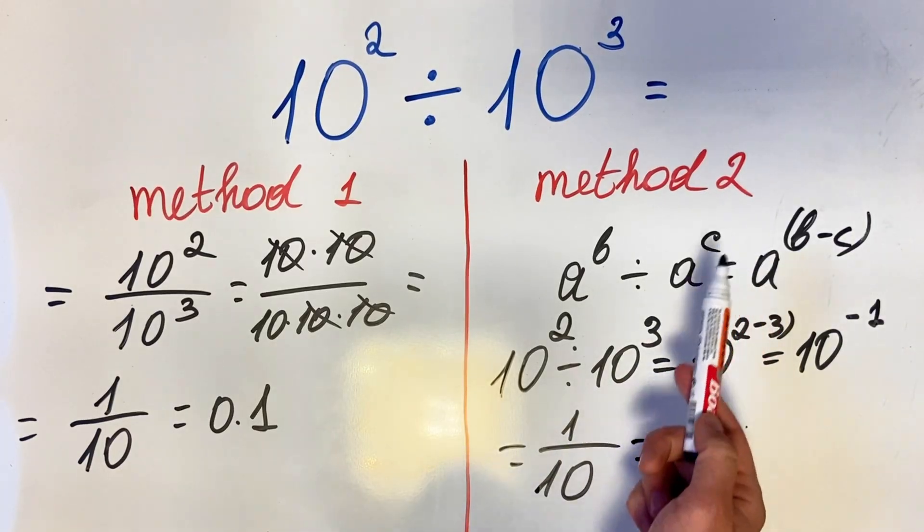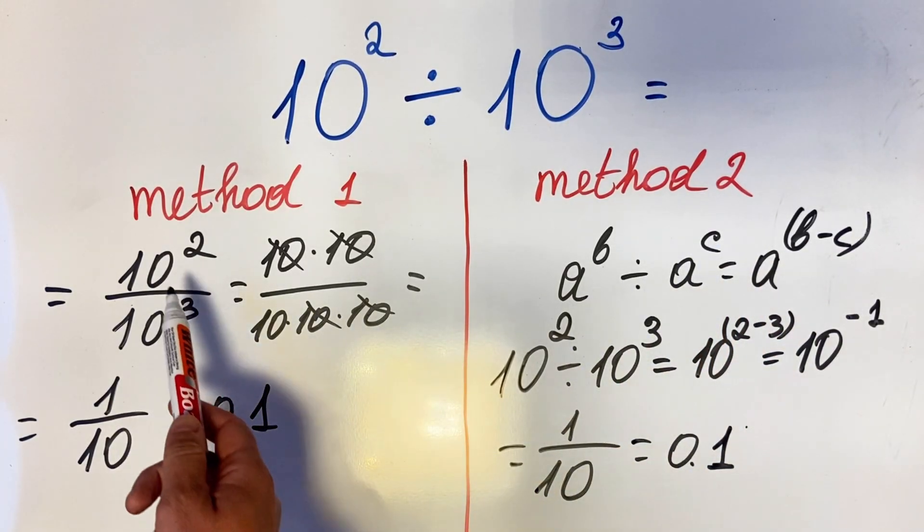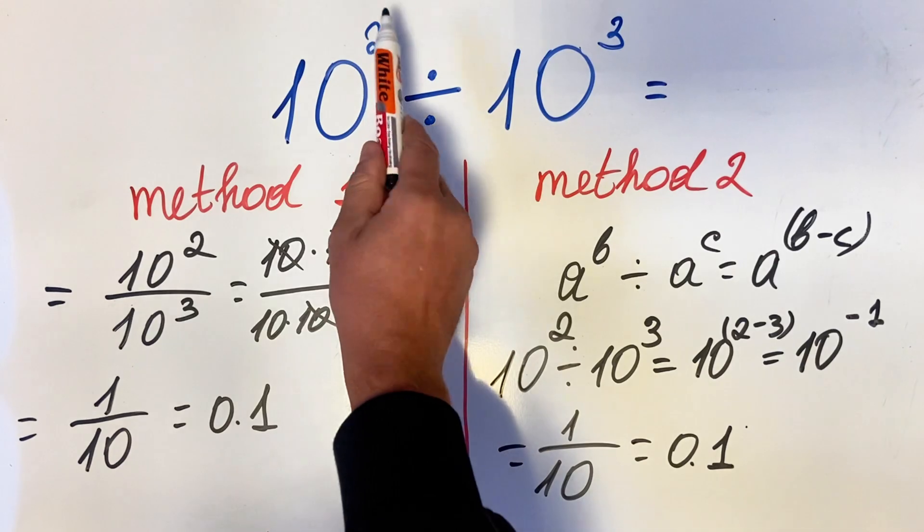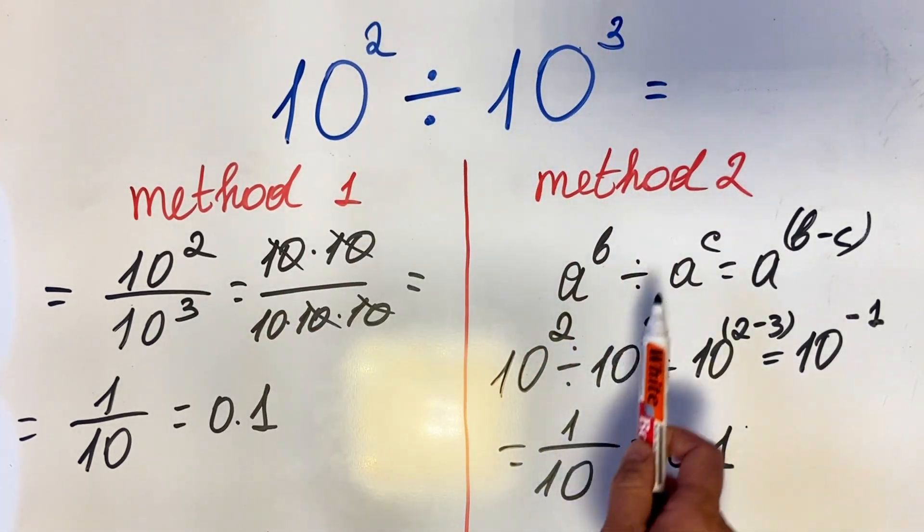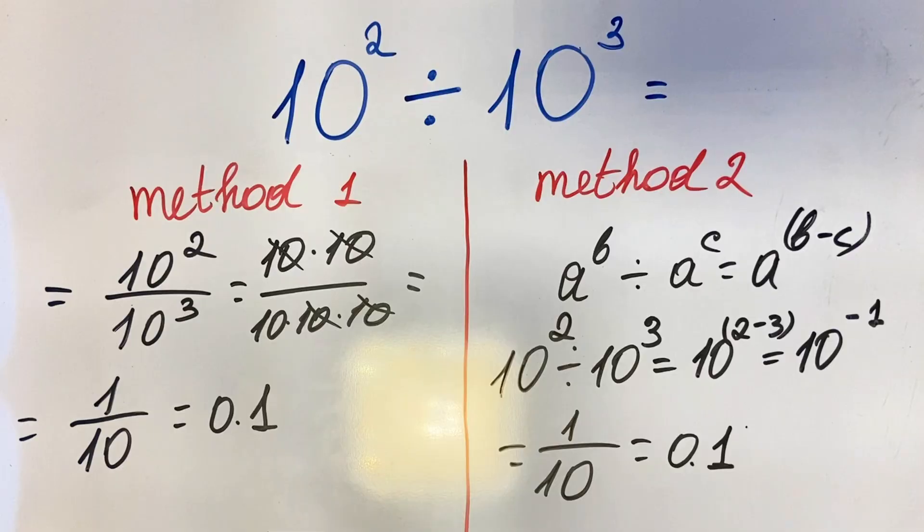Of course, if you have larger exponent numbers, I would use the formula method. But when you have small exponents with the same base, you can use either method.